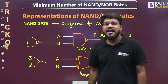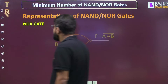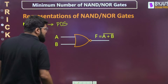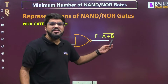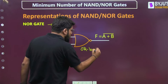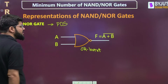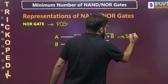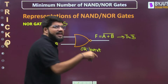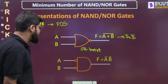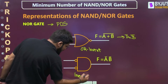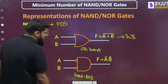NOR gate is preferred for POS expressions. The normal representation is (A+B)̄ — the OR-invert structure. By De Morgan's law this equals A̅·B̅, so it can also be implemented using an AND gate with complemented inputs A̅ and B̅. That is why we bubble first, do the inversion, and then feed to the AND gate — the invert-AND structure.